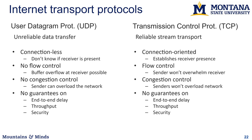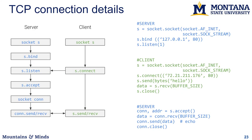TCP doesn't provide guarantees on end-to-end delay — that still depends on the network, and this is not a real-time protocol. There's no guarantee on throughput; you get as much as the network and receiver support. There's no built-in security — for that you'd need TLS. However, TCP will try really hard to deliver everything you sent and guarantees delivery in order, so you don't need to worry about bytes arriving out of order as you would with UDP.